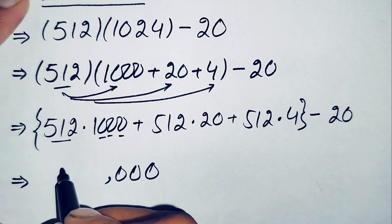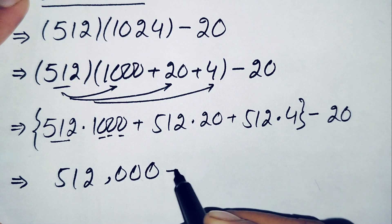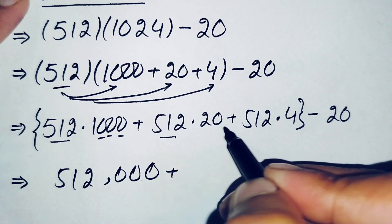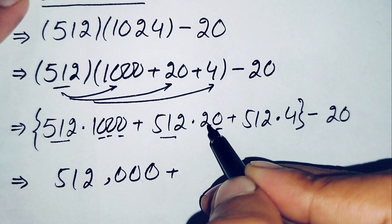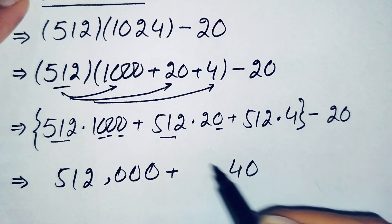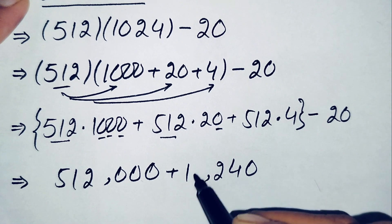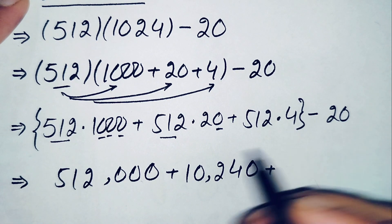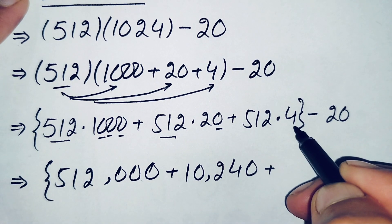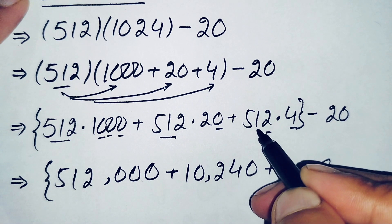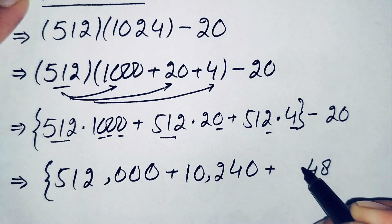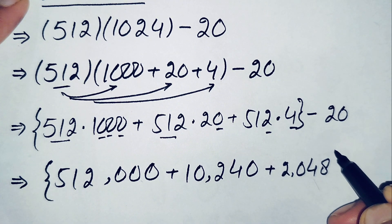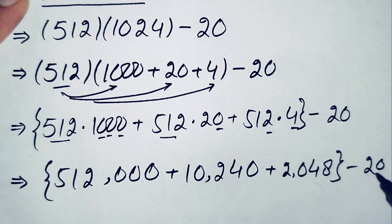So 512 times 1000 is 512000. Now multiplying 512 times 20: 512 times 0 is 0, 2 times 2 is 4, 2 times 1 is 2, and 2 times 5 is 10, giving 10240. Plus 512 times 4: 4 times 2 is 8, 4 times 1 is 4, and 4 times 5 is 20, giving 2048. So we have 512000 plus 10240 plus 2048, minus 20.